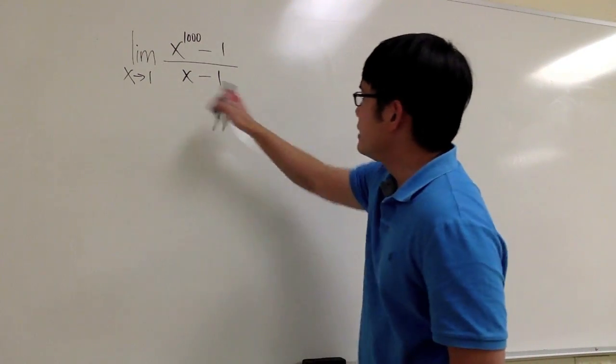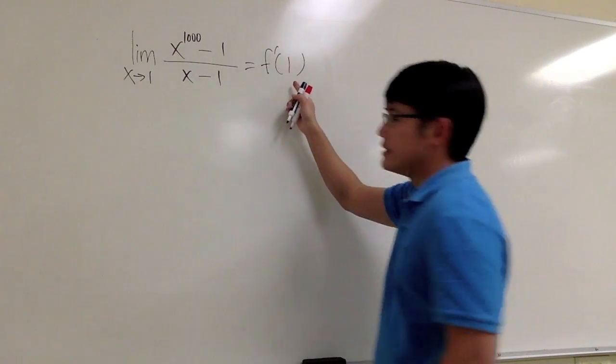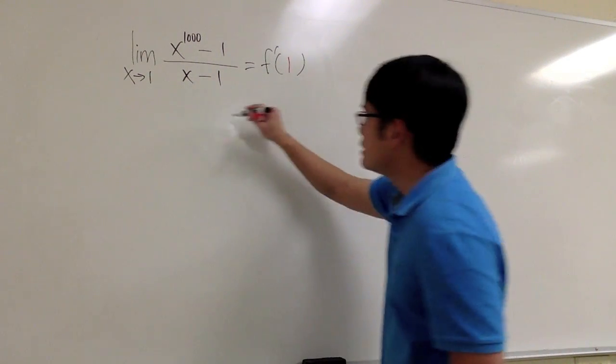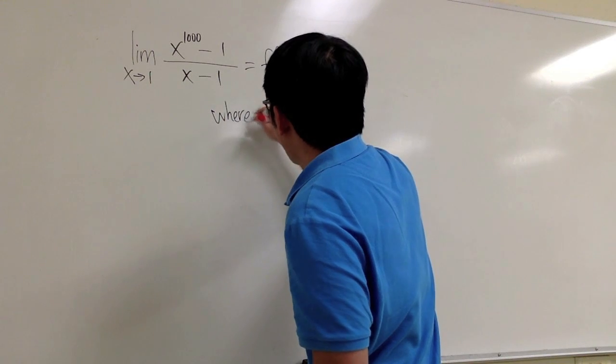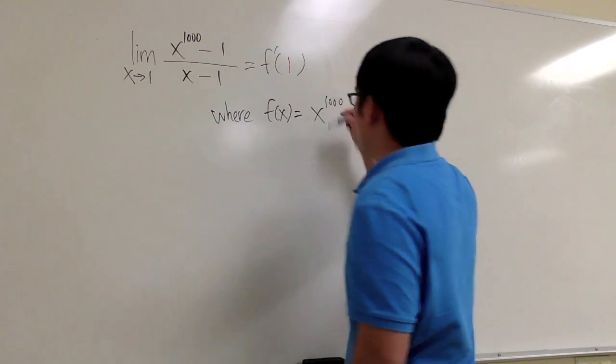And the secret is that this limit represents the derivative of some function at x equals 1. And the function is, let me just write this down, where the function that we are talking about is x to the 1000 power.